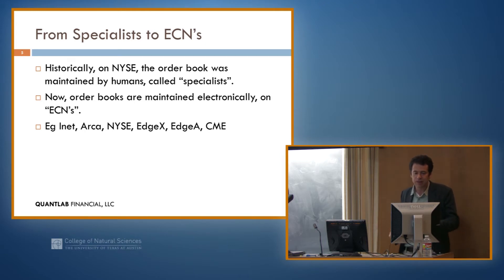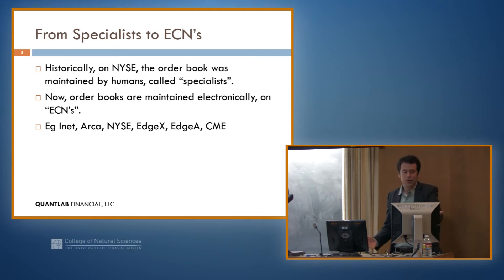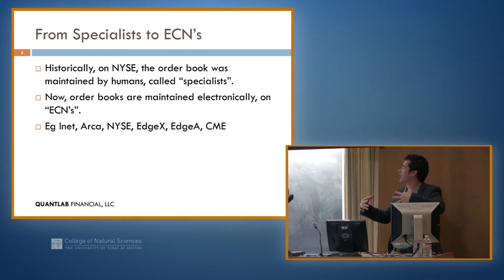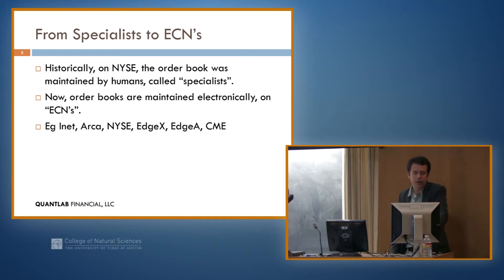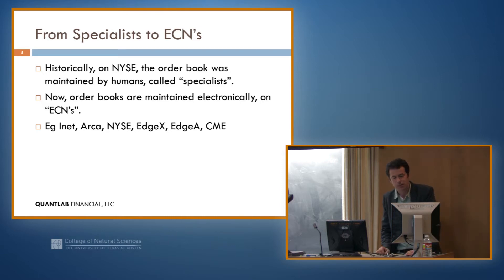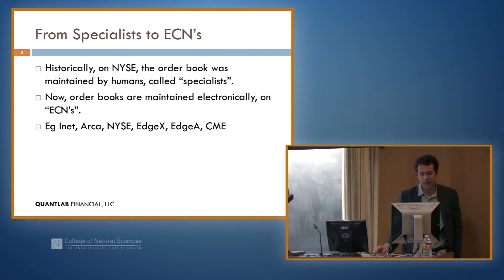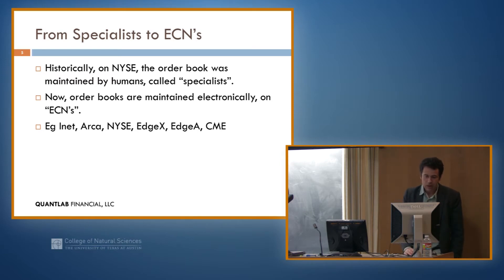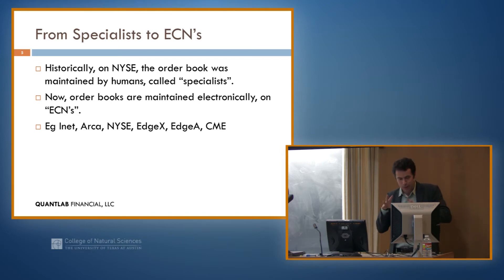All these order books are maintained on things called ECNs — electronic communication networks. You can just think of that as a computer which runs the stock exchange. Instead of having people keeping track of all the best prices, the exchange simply matches up market makers with market takers electronically. It's much more efficient. There's a proliferation of these electronic exchanges now — all examples of exchanges that trade stocks on what used to be just the New York Stock Exchange. If you want to buy IBM, you can do it through INET, ARCA, NICE, EDGEX, EDGEA, or CME, which is the Chicago Mercantile Exchange for options.